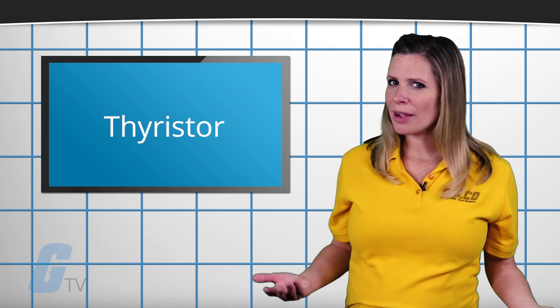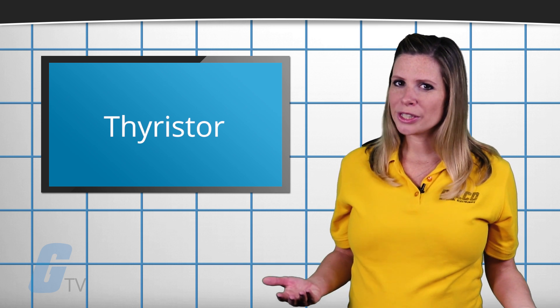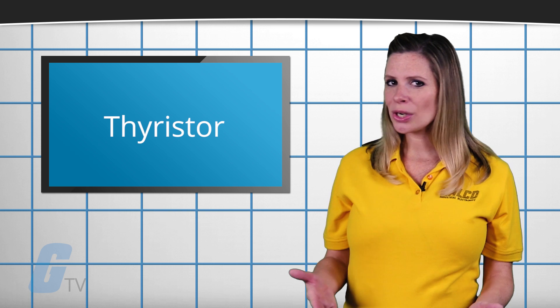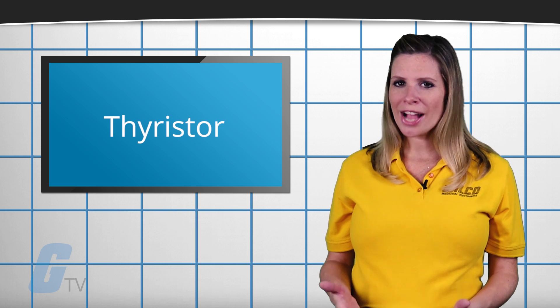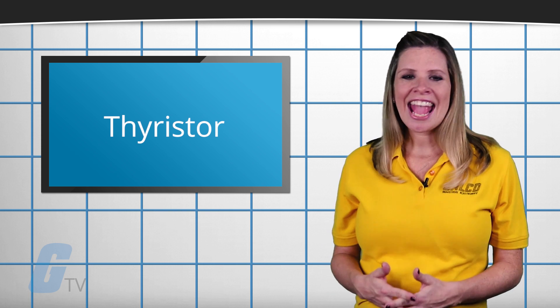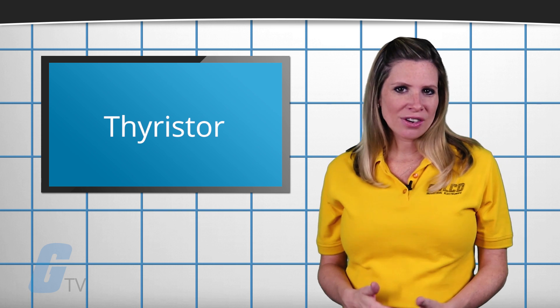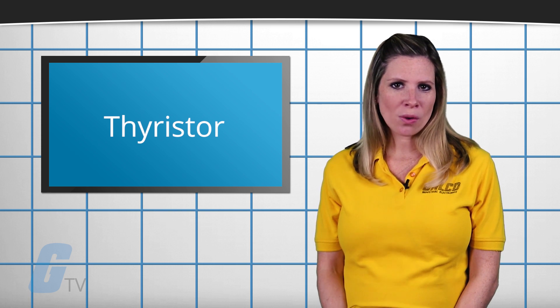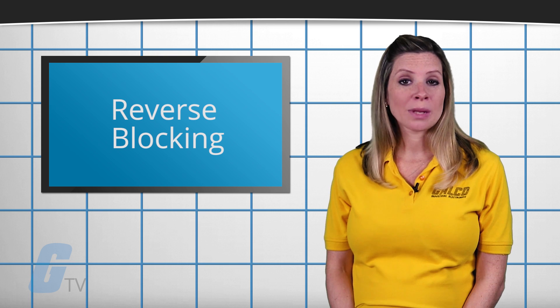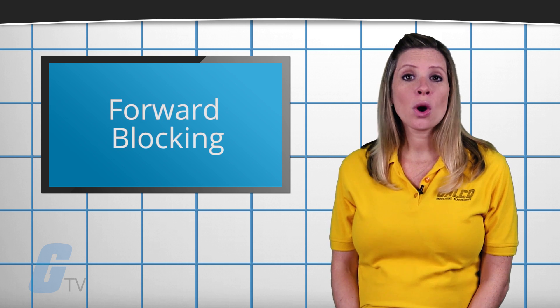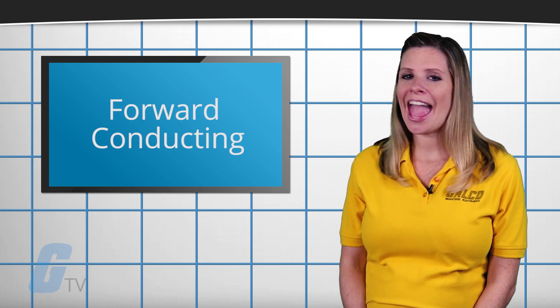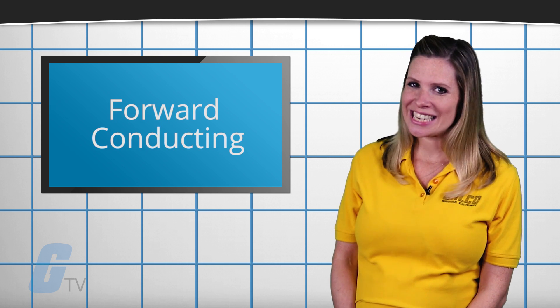Although thyristors can only transmit currents in one direction, they have three different operating modes: reverse blocking, forward blocking, and forward conducting.